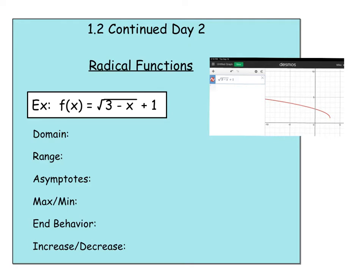No asymptotes, no discontinuities — and discontinuity means an excluded value from the domain. So let's look at a couple different types of functions today that we got to later in Algebra 2 last year that do have some domain restrictions. The first one I want to look at is a radical function with the square root.